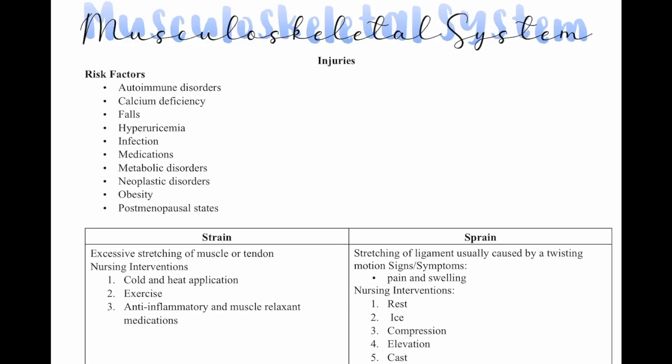Let's review the musculoskeletal system. First we're going to talk about injuries. Risk factors include autoimmune disorders, calcium deficiency, falls, hypoglycemia, infection, medications, metabolic disorders, neoplastic disorders, obesity, and post-menopausal states.